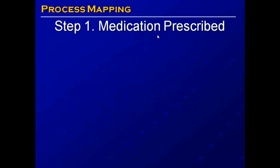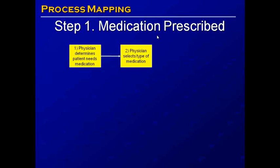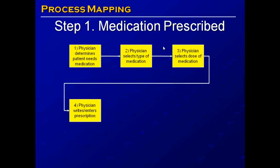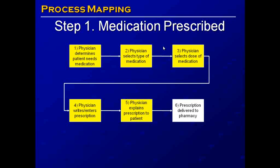Step one: the medication is prescribed. First, the physician determines that the patient needs medication. Next, the physician selects the type and dose of medication. Then the physician either writes or enters the prescription, explains the prescription to the patient, and the prescription is delivered to the pharmacy. The steps in yellow are performed by the physician.